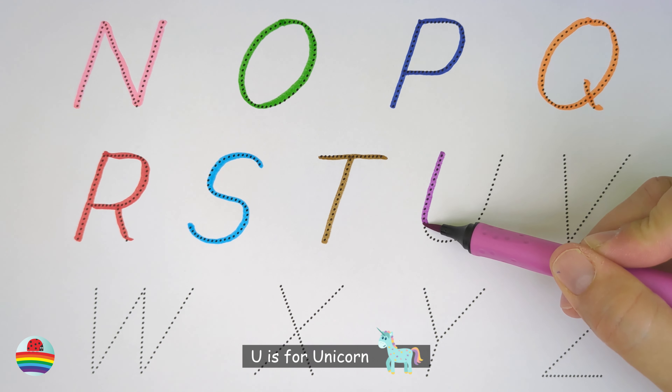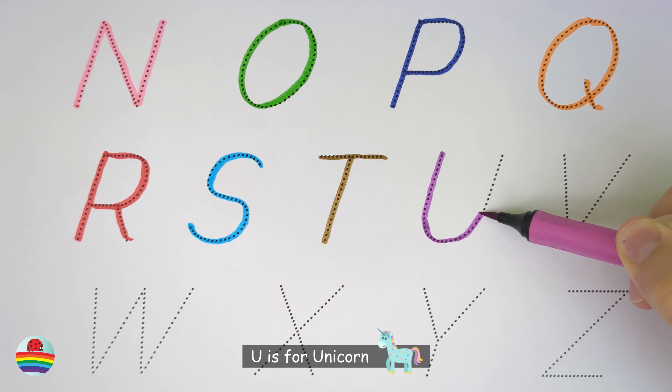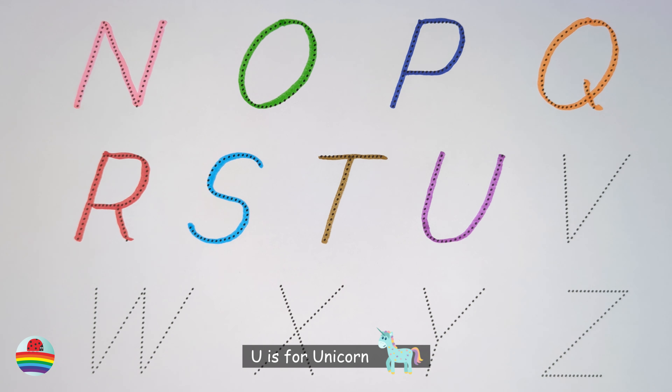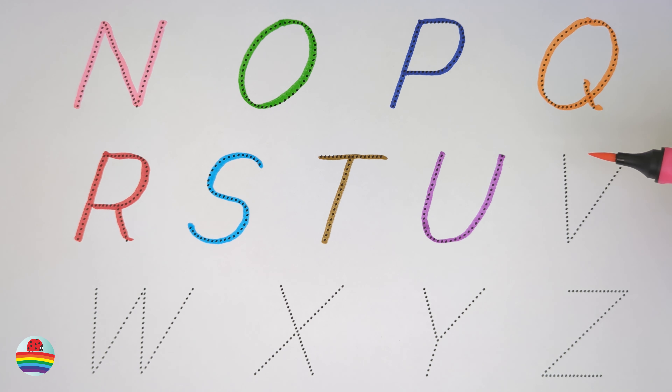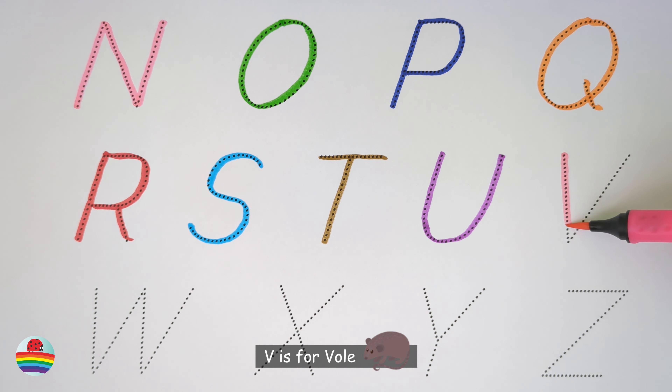U. U is for unicorn. U. V. V is for vole. V.